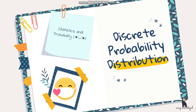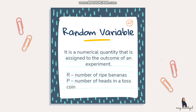For today's lesson we will be discussing the discrete probability distribution. In this video we will be discussing random variables, the different kinds of random variables, and we will proceed with the discrete probability distribution. Let's start first with the definition of a random variable.